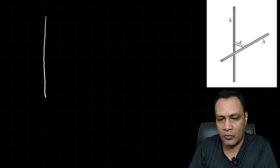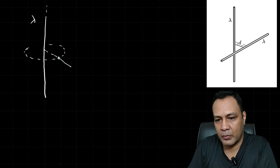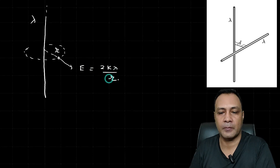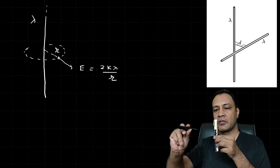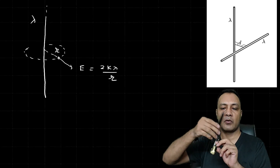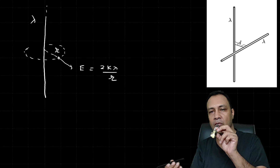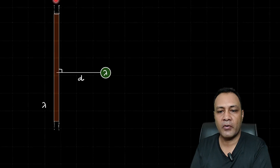Before proceeding, let me recall: if we have a rod of uniform charge density λ, at a distance r from it, the electric field magnitude is E = 2kλ/r, directed radially. So if the rod is oriented like this and I am at some point, the electric field points away from the rod radially — whether I am above, beside, or at any position around it.